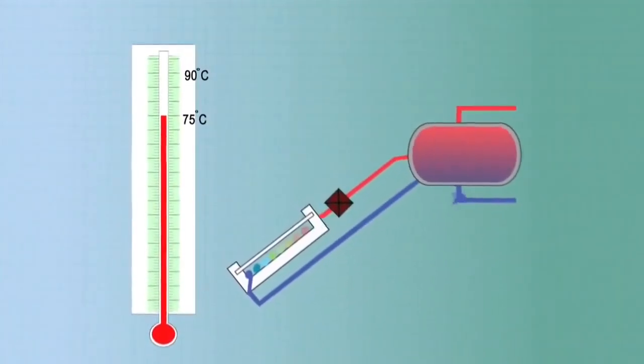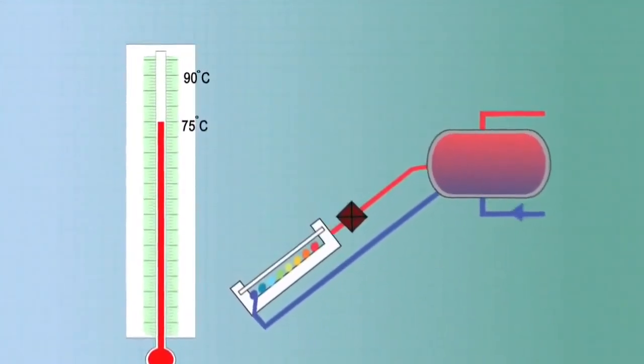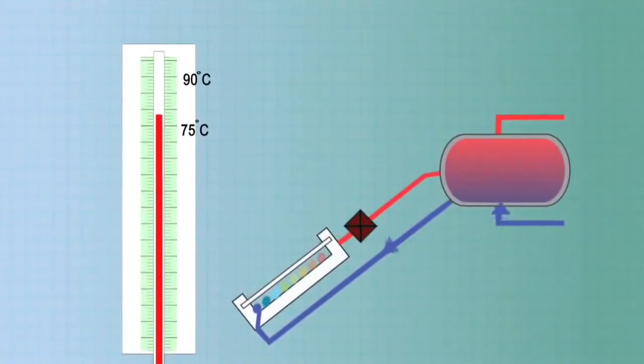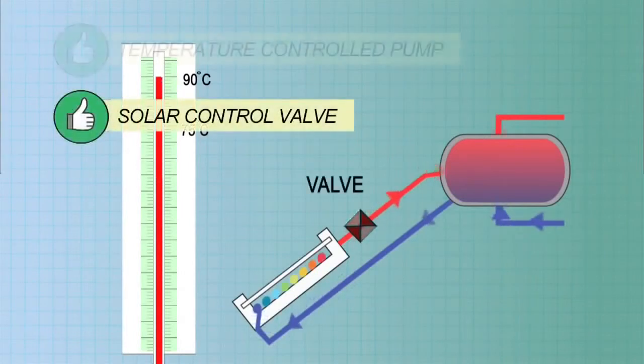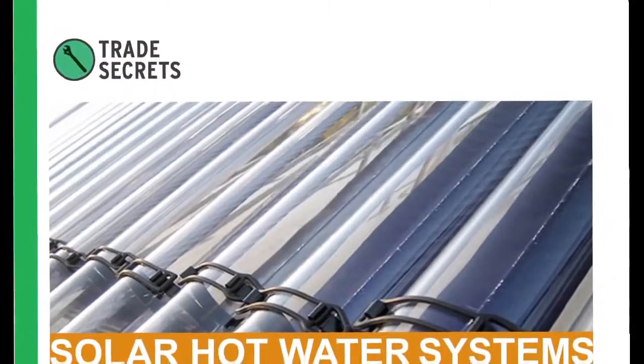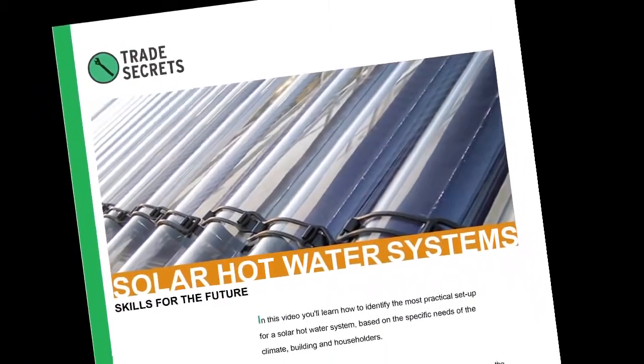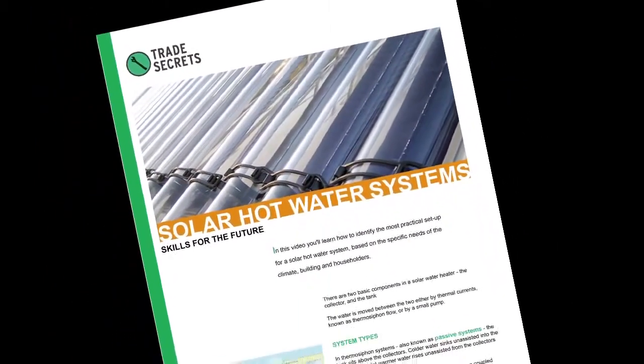The most common way to prevent overheating in the tank is by automatically stopping the circulation between collector and tank when the tank water gets too hot. This can be done using a solar control valve or a temperature controlled pump. See the fact sheet on the Trade Secrets website for more information about how to control for frost and overheating.